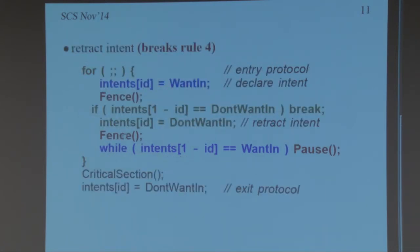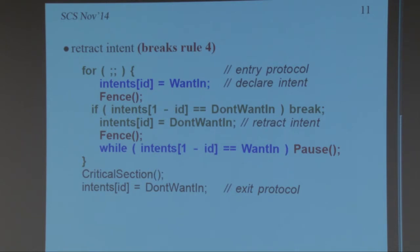What happens in real life: someone backs down and retracts their intent. So we improve: set 'I want in,' if the other person doesn't want in, go ahead. If they do, retract your intent politely and wait. This works 99.999% of the time. But on a computer, both can declare intent, both see the other wants in, both retract, both see the other retracted, both set intent again — and if they stay in perfect synchronization, they never go in.